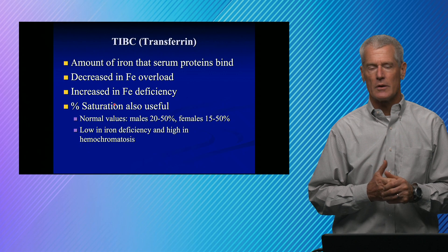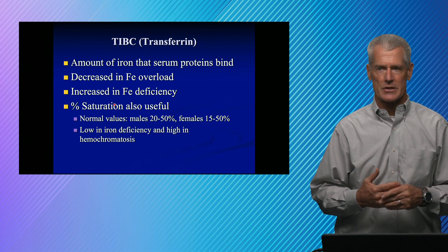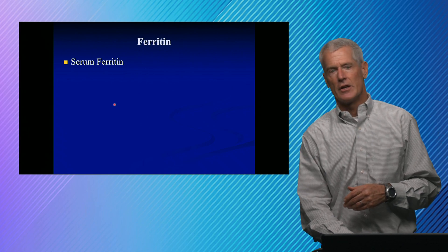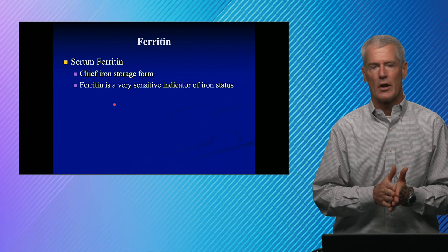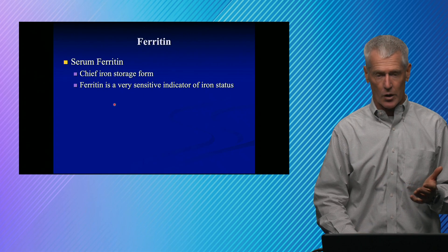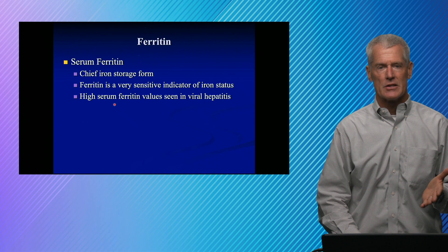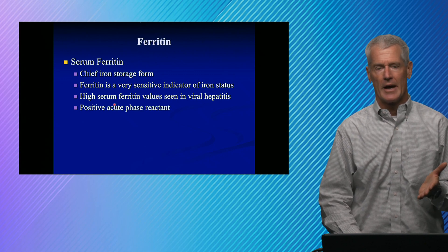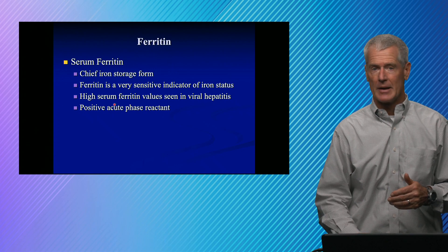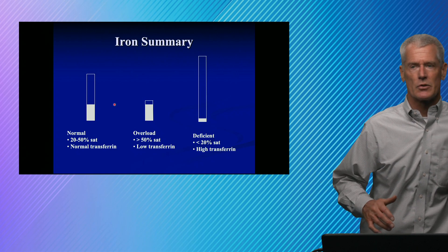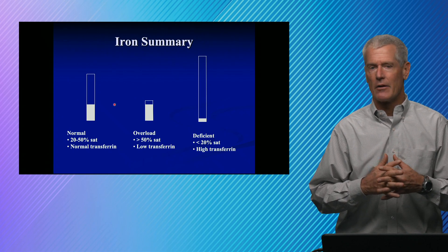Percent saturation is also useful. In iron excess, you're going to have a high percent saturation. In iron deficiency, you're going to have a low percent saturation. Ferritin is the chief storage form and probably our most sensitive indicator of iron status. It is an acute phase reactant, so it goes up in viral hepatitis and any inflammatory conditions. That can make interpretation a little confusing if you have inflammation at the same time as iron deficiency.